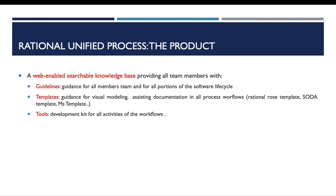Finally, the Rational Unified Process as a product is represented as a web-enabled searchable knowledge base that provides all team members with three principal elements. Guidelines provide guidance for all team members for all portions of the software lifecycle. Templates also provide guidance for visual modeling, documentation assistance, and all process workflows. For tools, the RUP process provides a development kit for all activities of the workflows of the process.